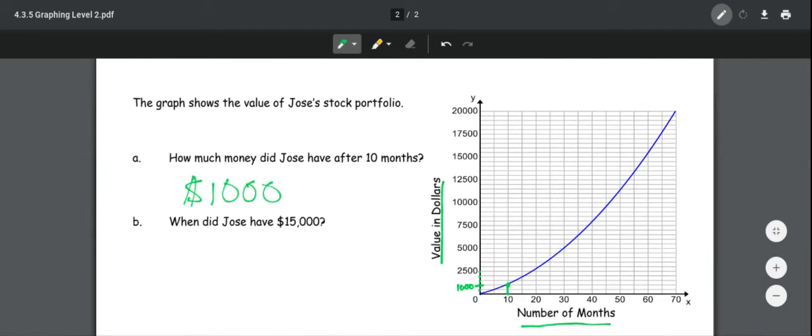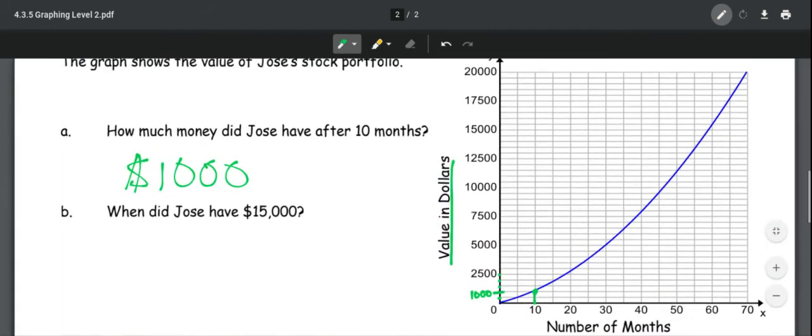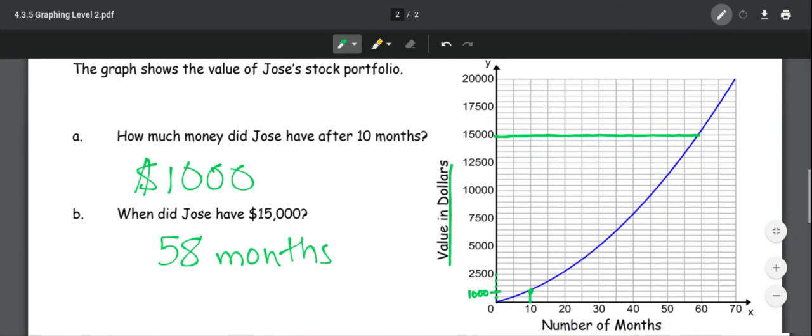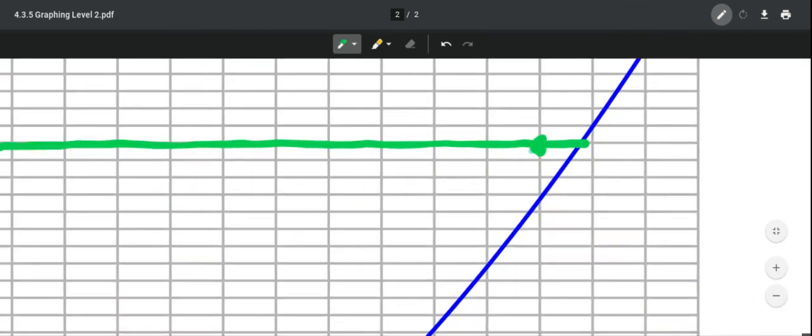When did Jose have $15,000? So now we have to figure out where $15,000 is. And you go all the way over. And you see that it's almost 60 months, but not quite. So maybe 58 or 59 months. So if you would have said 60, that would have been wrong because it's not quite at 60. If you would have said 55 months, that would be wrong because 55 months is here, 60 months is here, and it's in between.